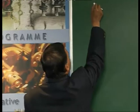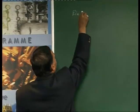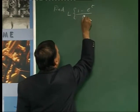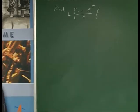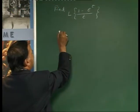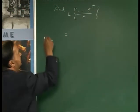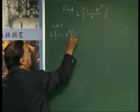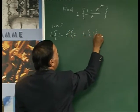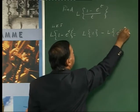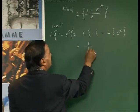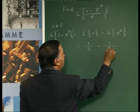Find the Laplace transform of L{(1 - e^t)/t}. We know that L{1 - e^t} equals L{1} minus L{e^t}, which is 1/s minus 1/(s-1).